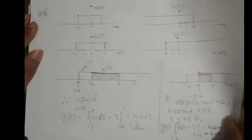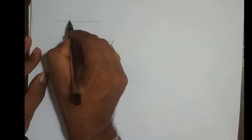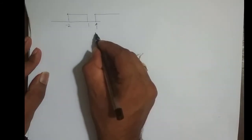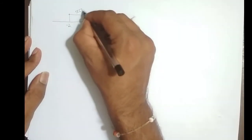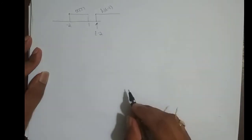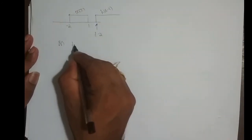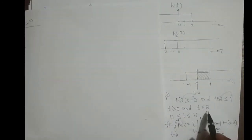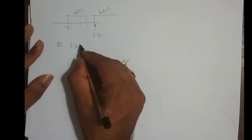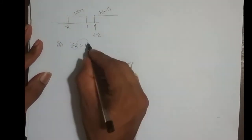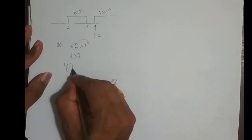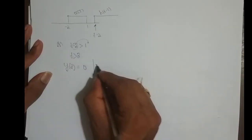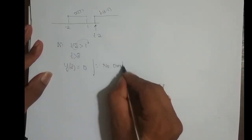If I move the slider further right so that t-2 > 1, the condition becomes t > 3. In this case the two signals no longer overlap, so y(t) = 0 for t > 3.